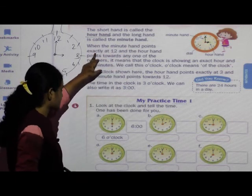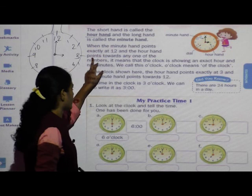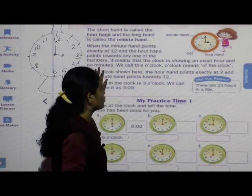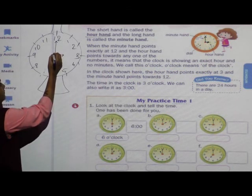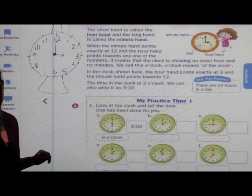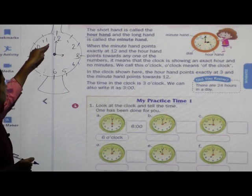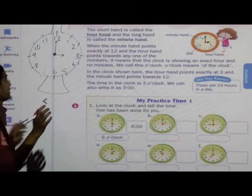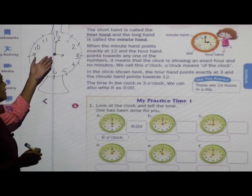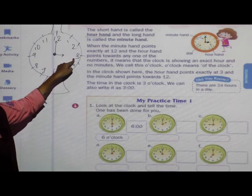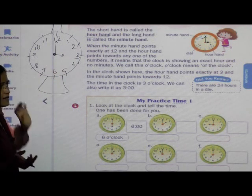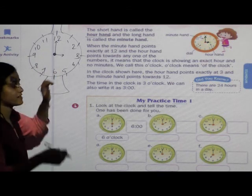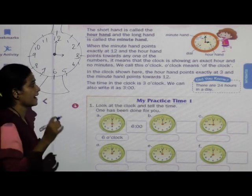When the minute hand points exactly at twelve and the hour hand points towards any of the numbers, it means the clock is showing an exact hour and no minutes. Students, pay attention — when the minute hand is on twelve, and the hour hand can be on any number, what is the time? It shows the exact hour.